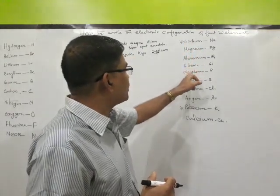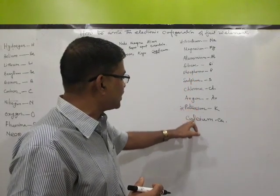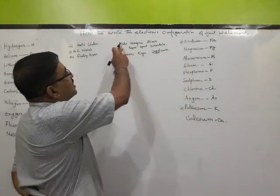Then for elements 11 to 20: sodium, magnesium, silicon, phosphorus, sulfur, chlorine, argon, potassium, and calcium. You can use your own style and your own trick to remember these.